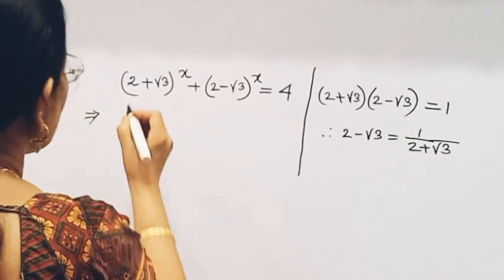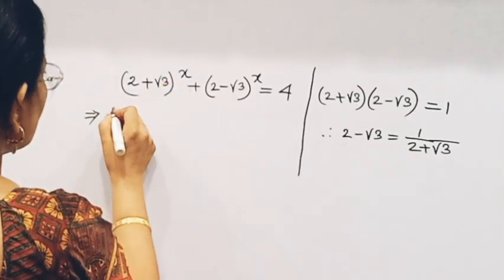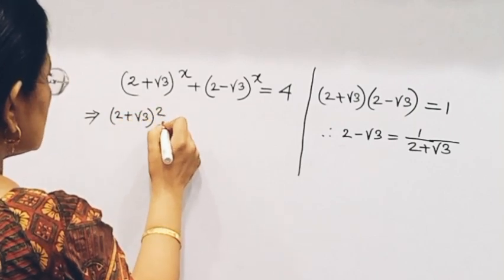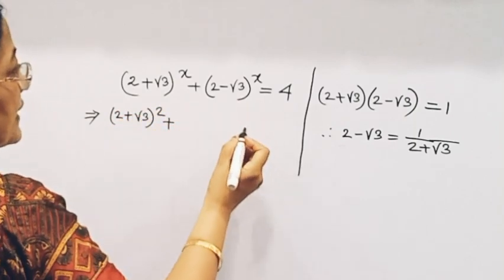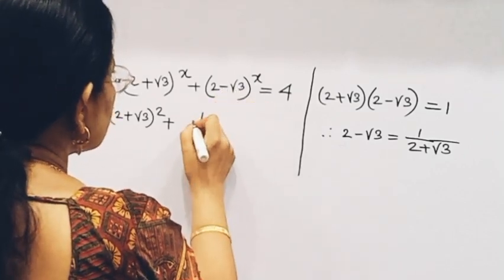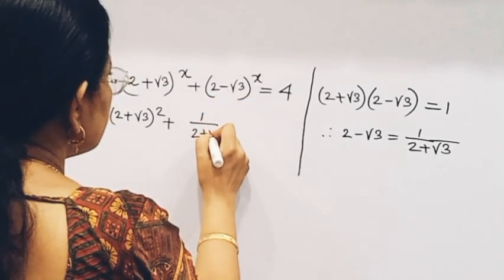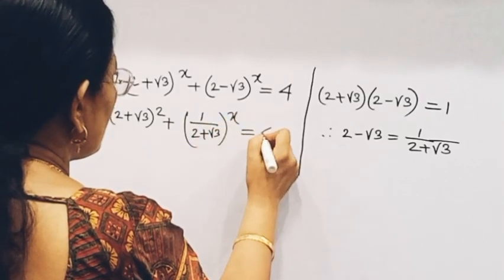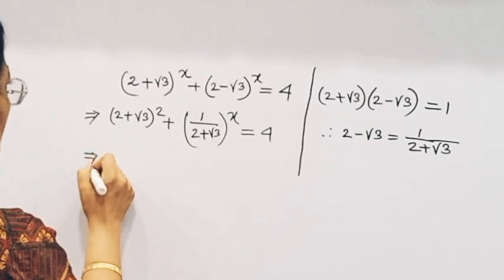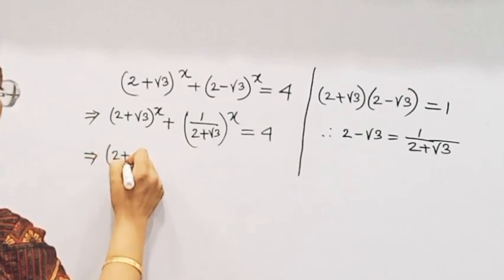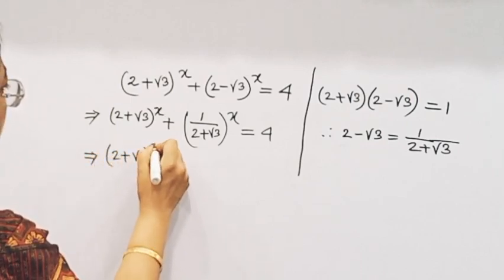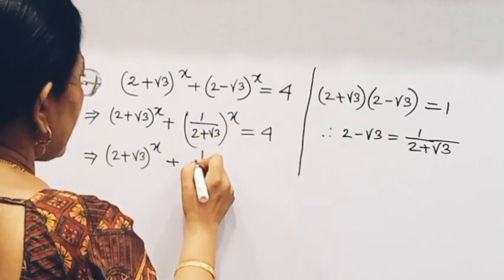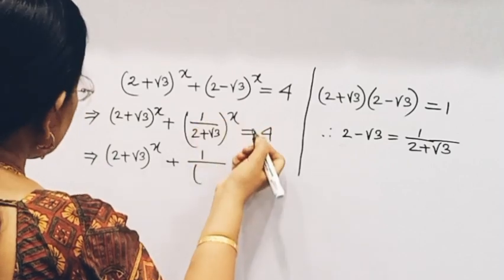We will set 2 + √3 equal to x, and 2 - √3 equal to 1 divided by (2 + √3), which equals x.